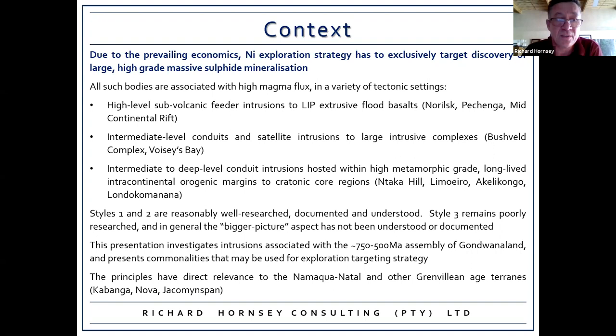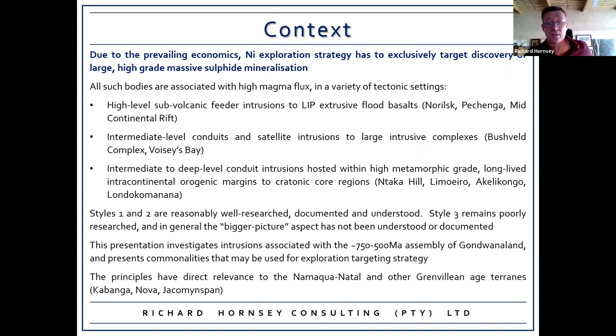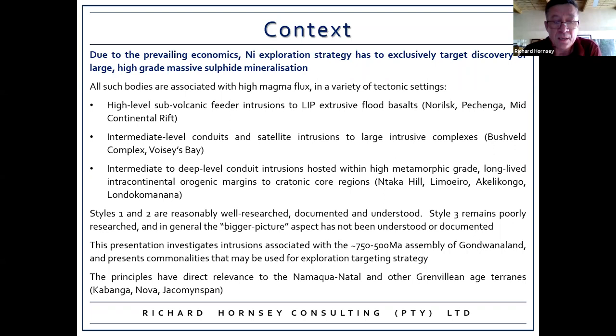Such as Norilsk, Pechenga, mid-continental rift, etc. The second setting is intermediate-level conduits and satellite intrusions to large intrusive complexes such as the Bushveld, Voisey's Bay, and the satellite intrusions thereof. A third category, which I'm going to talk about, are intermediate to deep-level conduit intrusions hosted within high metamorphic grade, long-lived intracratonic orogenic margins to cratonic core regions — examples being Antarka Hill, Limoeiro, Akali Congo, and Londo Commonana. Whereas styles one and two are reasonably well researched, style three remains very poorly researched and the bigger picture has not been understood.